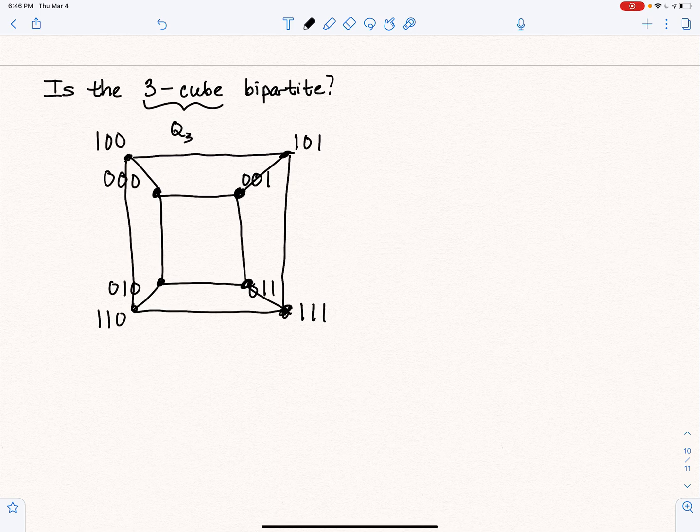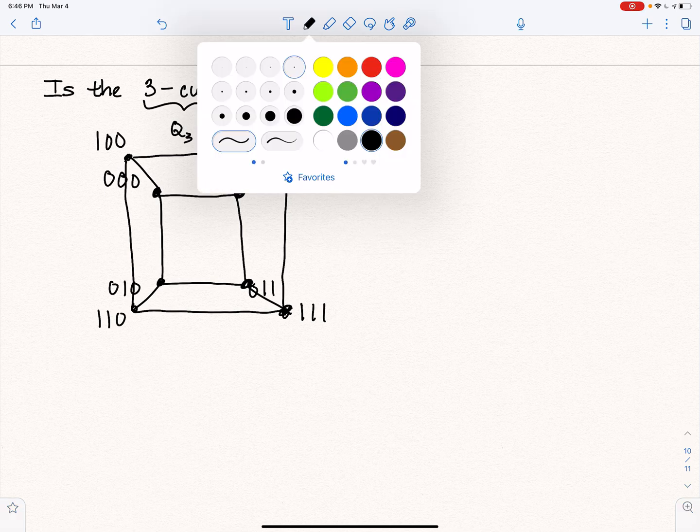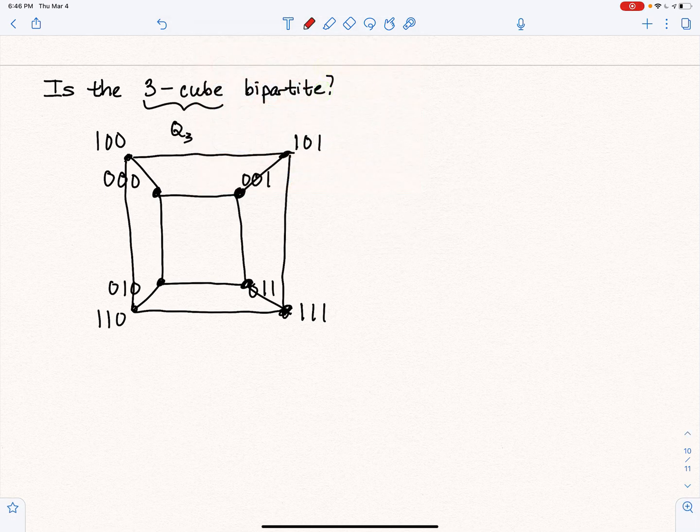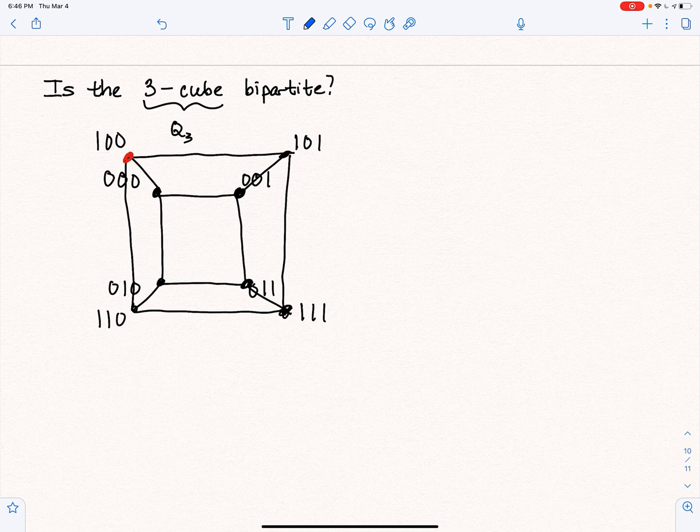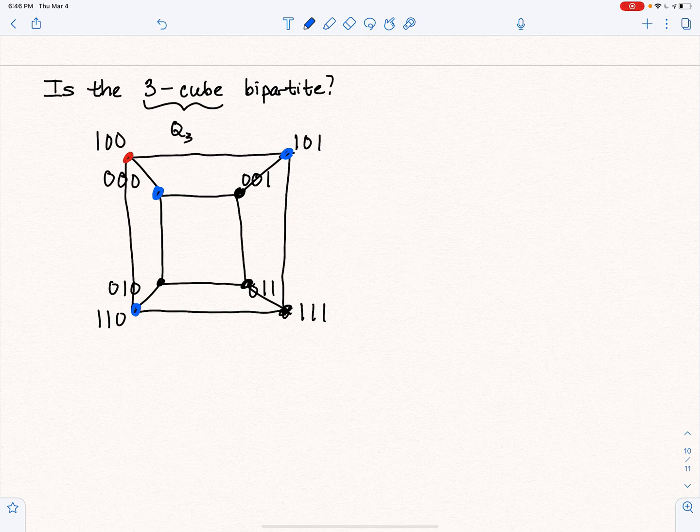Okay, so now we have our eight vertices. So now here's the fun part. So I'm going to start with red. And I'm going to color the upper left-hand corner. Now that means that any vertex adjacent to that vertex is going to be colored blue. So that means this one, this one, and this one.